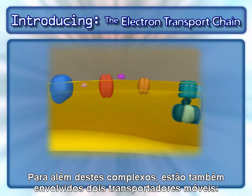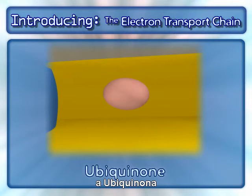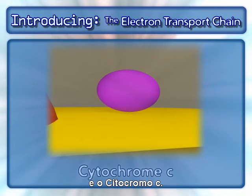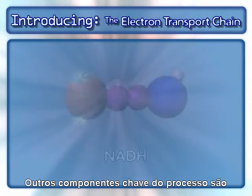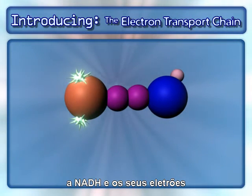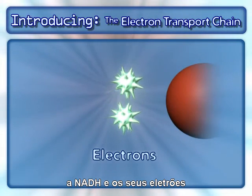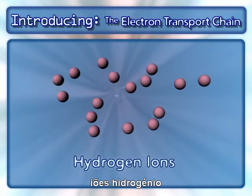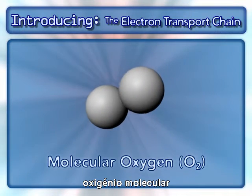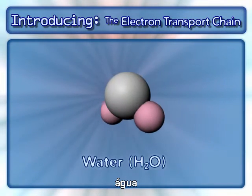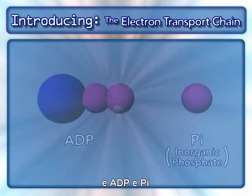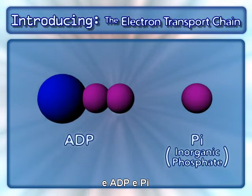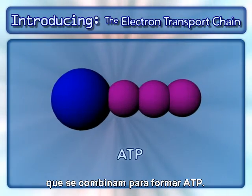In addition to these complexes, two mobile carriers are also involved: ubiquinone and cytochrome C. Other key components in this process are NADH and the electrons from it, hydrogen ions, molecular oxygen, water, and ADP and inorganic phosphate, which combine to form ATP.